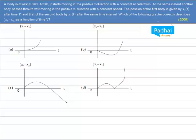Let us see this question. This question came in 2008 and it is also one of the better questions asked in AIEEE. A body is at rest at x equal to 0. At t equal to 0, it starts moving in the positive x direction with a constant acceleration. At the same instant, another body passes through x equal to 0 moving in the positive x direction with a constant speed.